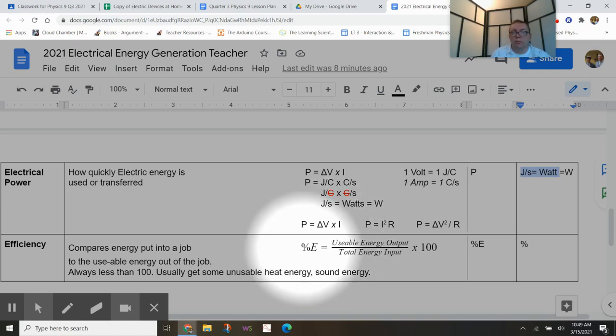So the efficiency is a percentage. So it's a percent efficiency, and it's usable energy output goes on top and total energy input goes on bottom. And then we just multiply those two times 100 to make it a percent.